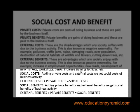Social cost can be calculated by adding private cost and external cost: external cost plus private cost equals social cost. Similarly, social benefits are calculated by adding private benefits and external benefits: external benefits plus private benefits equals social benefits.